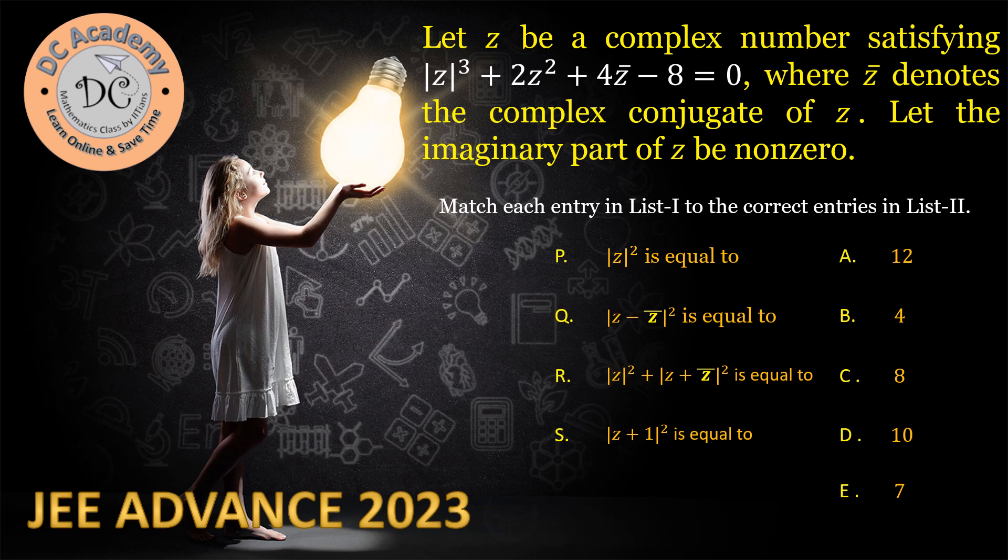Hi, in this video we are going to solve a problem which appeared in JEE Advanced 2023. In this problem, we have to match one column, that means list one, so the values of the list two. So here we have a complex equation and we need to find the respective values. That's the problem. Let's go ahead and solve it.